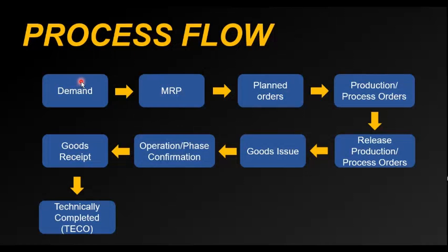Once the demand has been created — and the demand can be a sales order, a safety stock, a planned independent requirement, or a forecast-based planning on the finished product — the next step is to run MRP. During MRP, the system evaluates the existing stock levels for the finished product versus the total requirement quantity. If there is a shortage, MRP creates planned orders for in-house manufactured items.